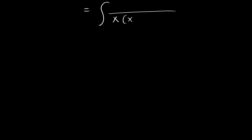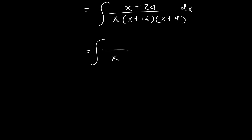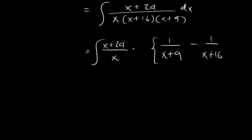So we have our integral with denominator x times x plus 16 times x plus 9, and numerator x plus 24. All we could do is say we have x plus 24, and multiply by 1 minus (x plus 9) minus 1 over (x plus 16). When you rearrange and bring them back together, x minus x plus 16 minus x plus 9 gives 7, so we multiply by 1 over 7.